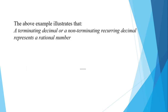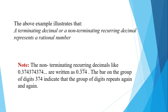The above examples illustrate that a terminating decimal or a non-terminating recurrent decimal represents a rational number. Non-terminating recurring decimals are written with a bar over the repeating digit or group of digits, indicating that the group repeats again and again.